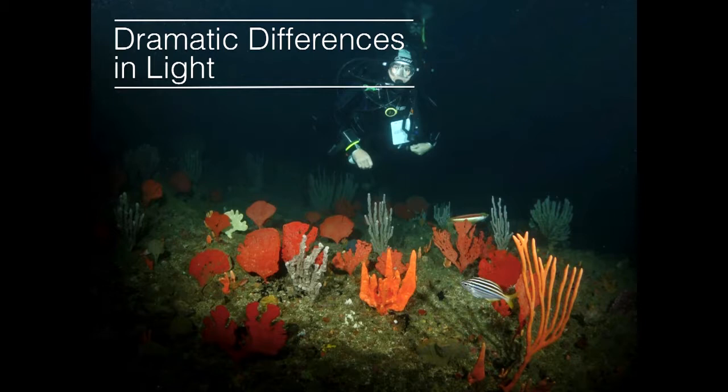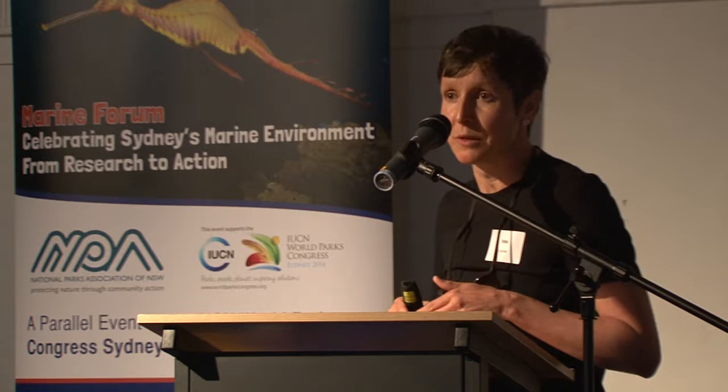The differences in depth and turbidity lead to dramatic differences in light. In Sydney Harbour the shallow bays are very well lit all the way down to the sea floor, while the deeper parts are substantially darker. This in return influences the type of communities you find in the harbour. Marine plants would have to live in the well-lit zones, so we find them along the foreshore and in shallower areas, while different communities inhabit the deeper parts.